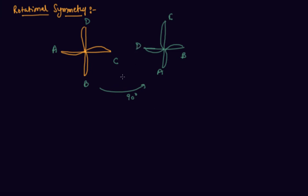And similarly, if you rotate it further 90 degrees, you will get D, A, B, C here. So all these figures are symmetrical, and so this is called rotational symmetry.